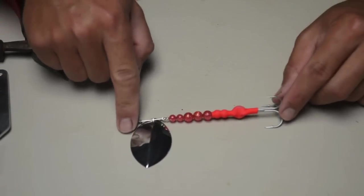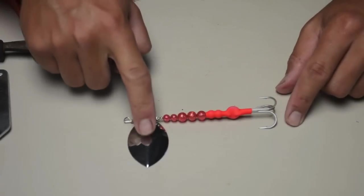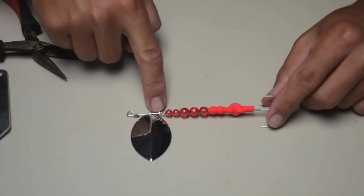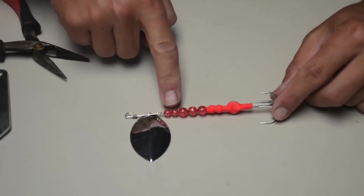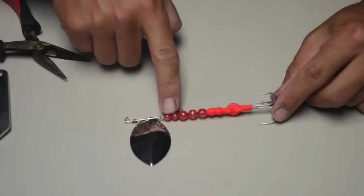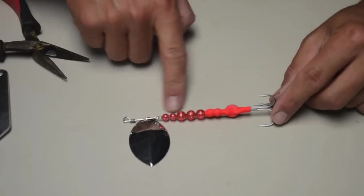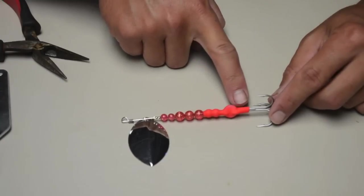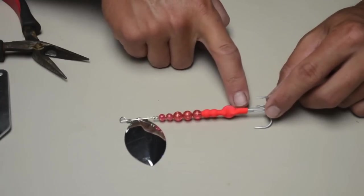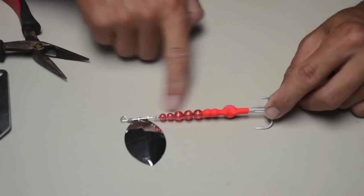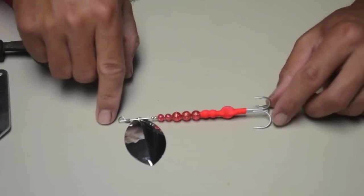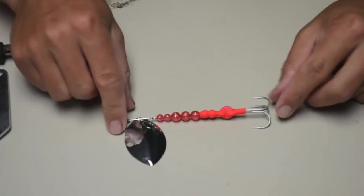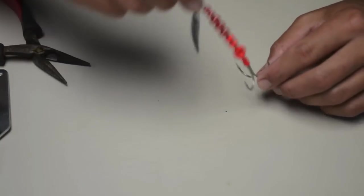So again, just the wire loop, wide willow leaf blade, number 4 clevis, two hollow metal beads, two plastic beads six millimeter, followed by three eight millimeter beads, two six millimeter beads underneath the plastic tubing, the split ring which attaches the hook to the wire shaft. And there you go. You got your trolling spinner for salmon.